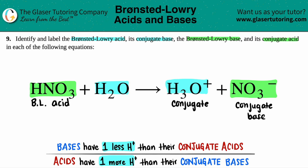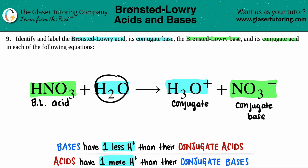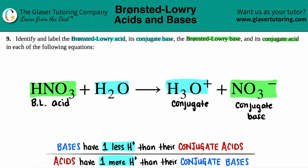Now do the same thing for the other pair. Out of H2O and H3O+, H3O+ has more hydrogens, so it has to be the acid — and specifically it's the conjugate acid because it's on the product side. That means H2O would be the Bronsted-Lowry base.